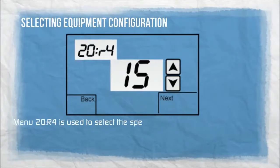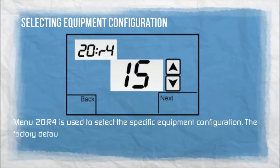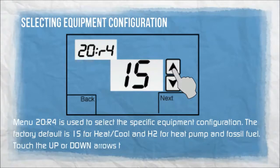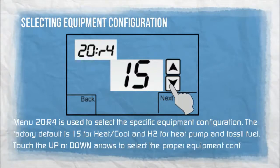Menu 20R4 is used to select the specific equipment configuration. The factory default is 1S for heat/cool and H2 for heat pump and fossil fuel. Touch the up or down arrows to select the proper equipment configuration.